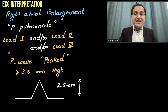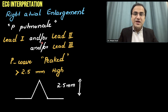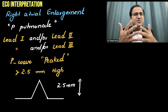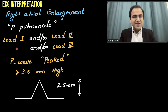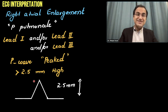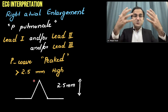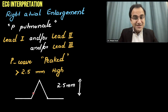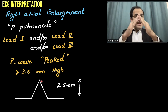P pulmonale may be present in lead 1, lead 2, and/or lead 3 — in either one or more than one of these leads. P pulmonale is a P wave which is peaked. Since there is atrial enlargement, there is more voltage and you will see peaking of the P wave. This is how P pulmonale appears on ECG — a tall P wave with a pointed end.